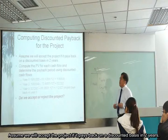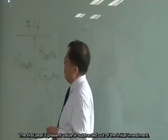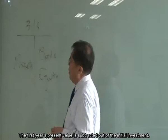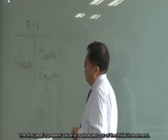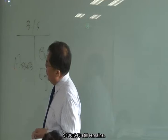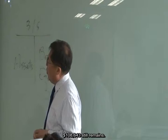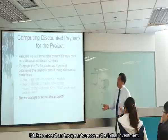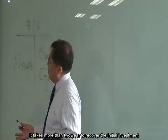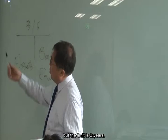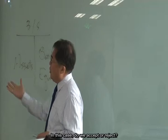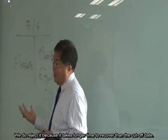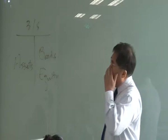Assuming the limit is two years: the discounted cash flow in year one leaves $108,000 still unrecovered, and after year two you still have $52,000 left. In year three you recover enough, but since it takes more than two years, we reject the project. Checking criteria: does discounted payback account for time value of money? Yes, we discounted the cash flows.